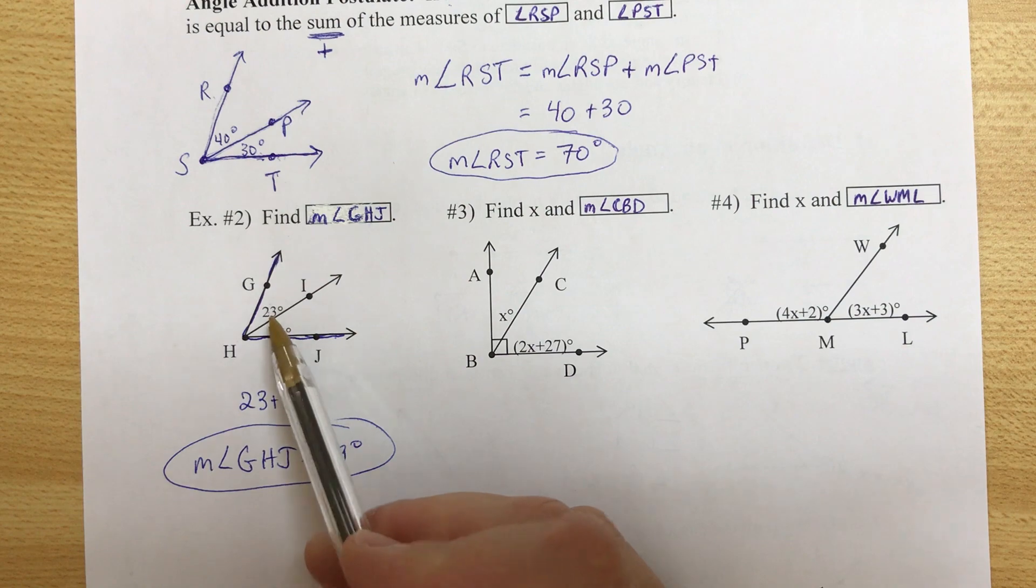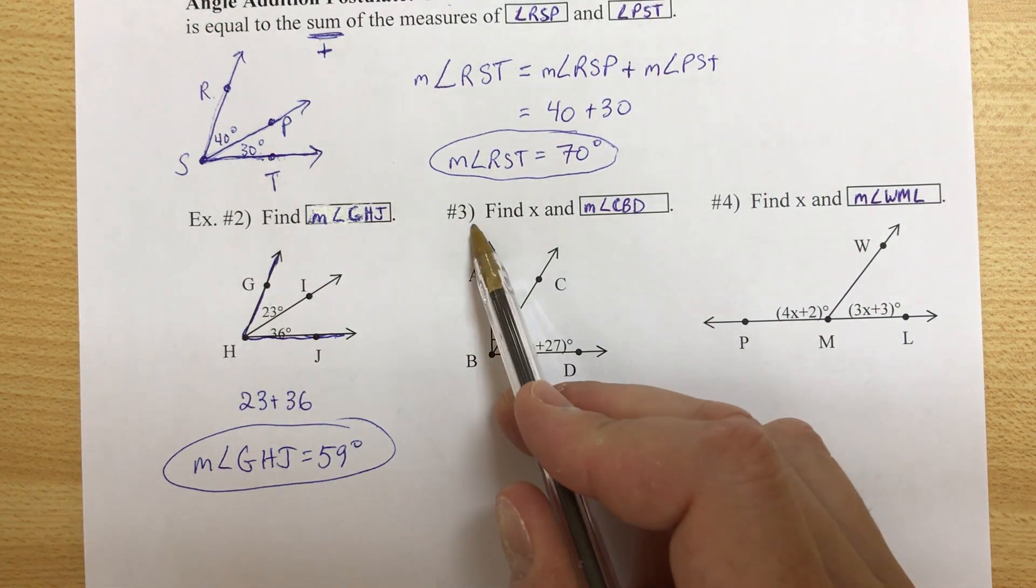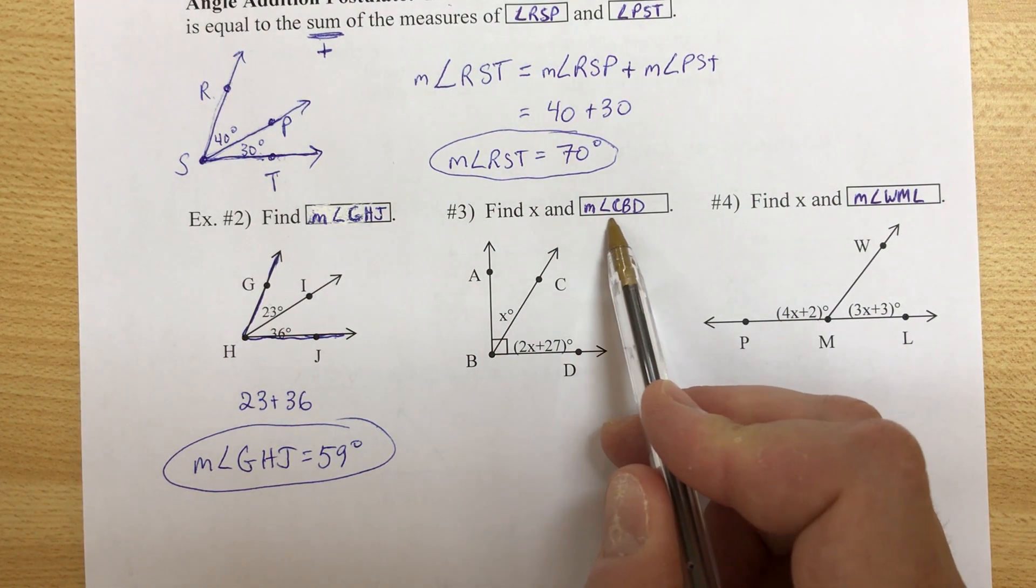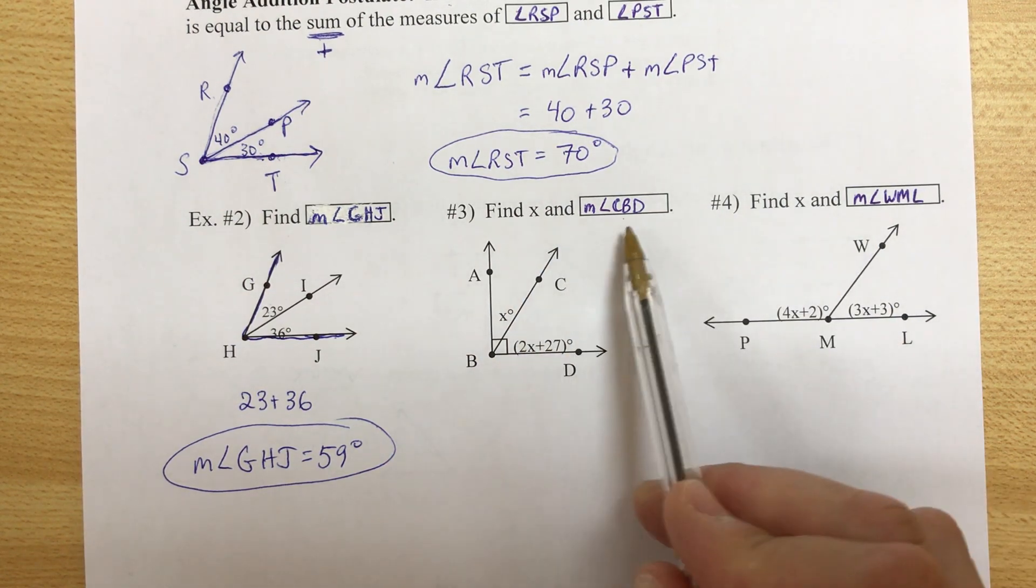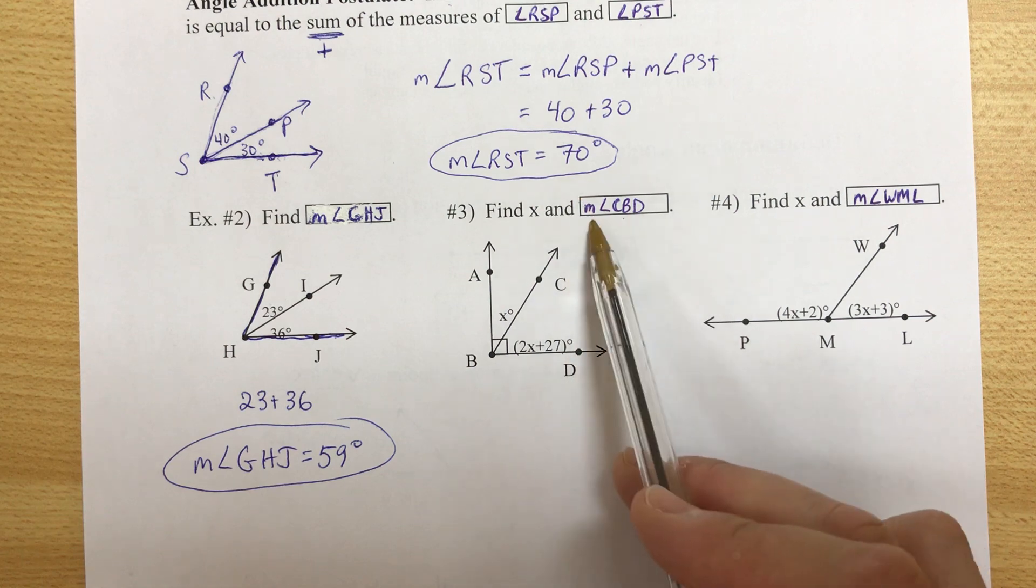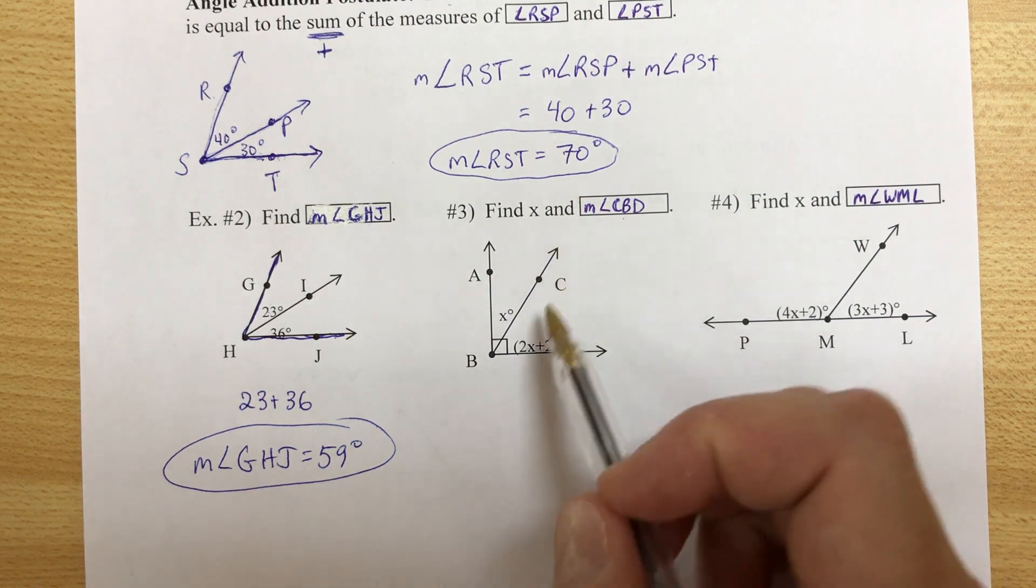Okay that was pretty easy. Find X, number 3, and the measure of angle CBD. The boxes are here because the printout was a little bit weird. So there shouldn't be boxes but I apologize for that.